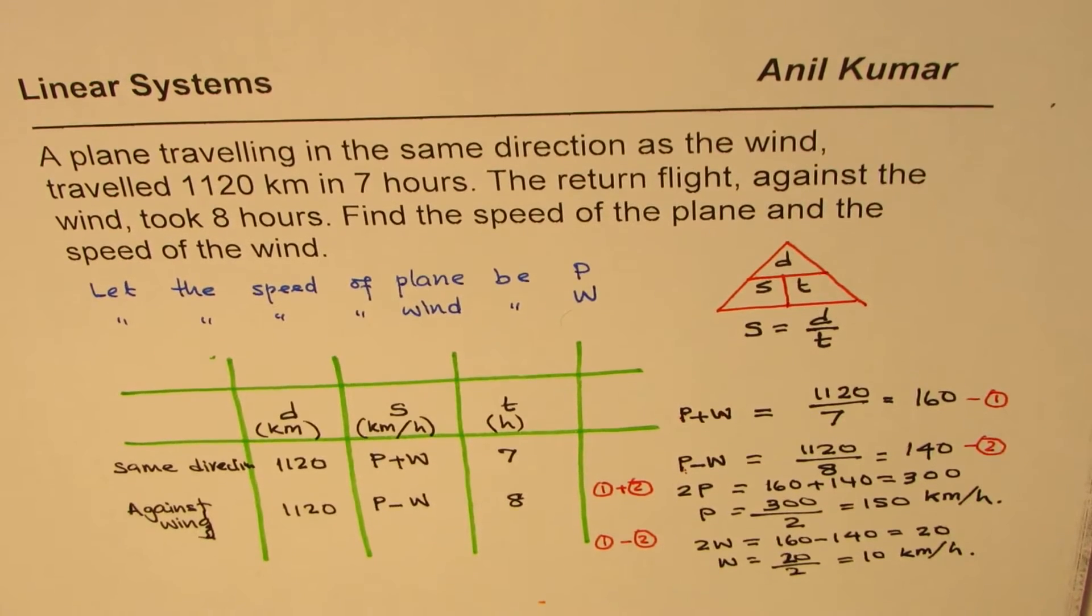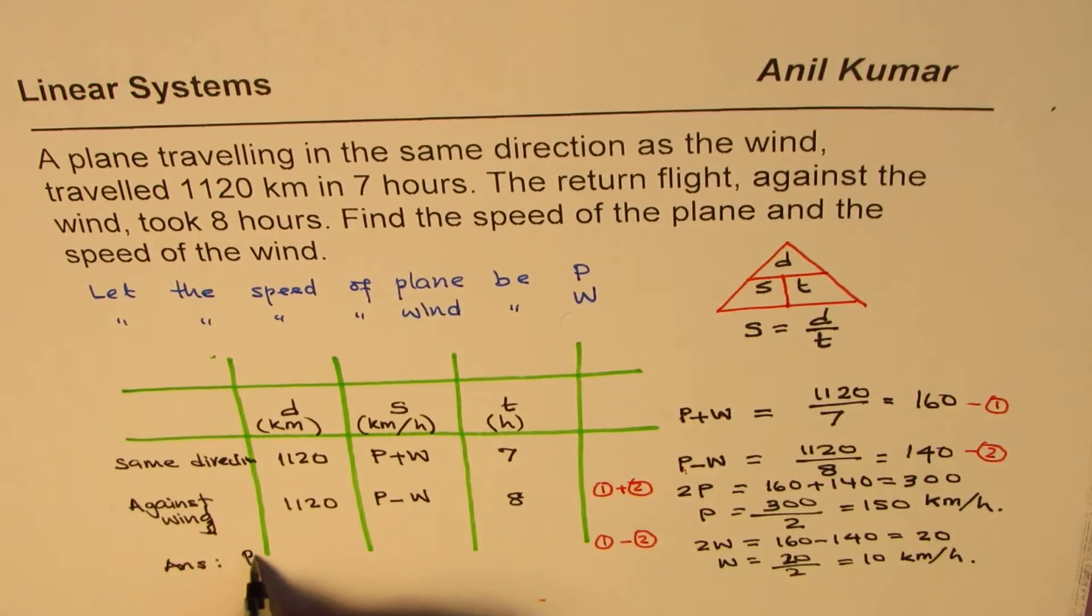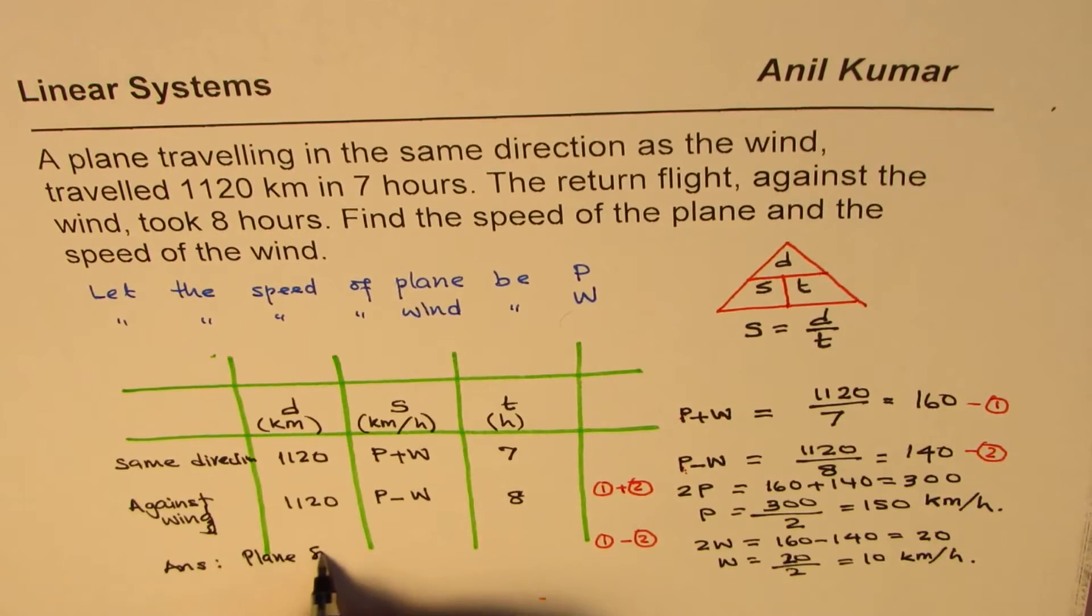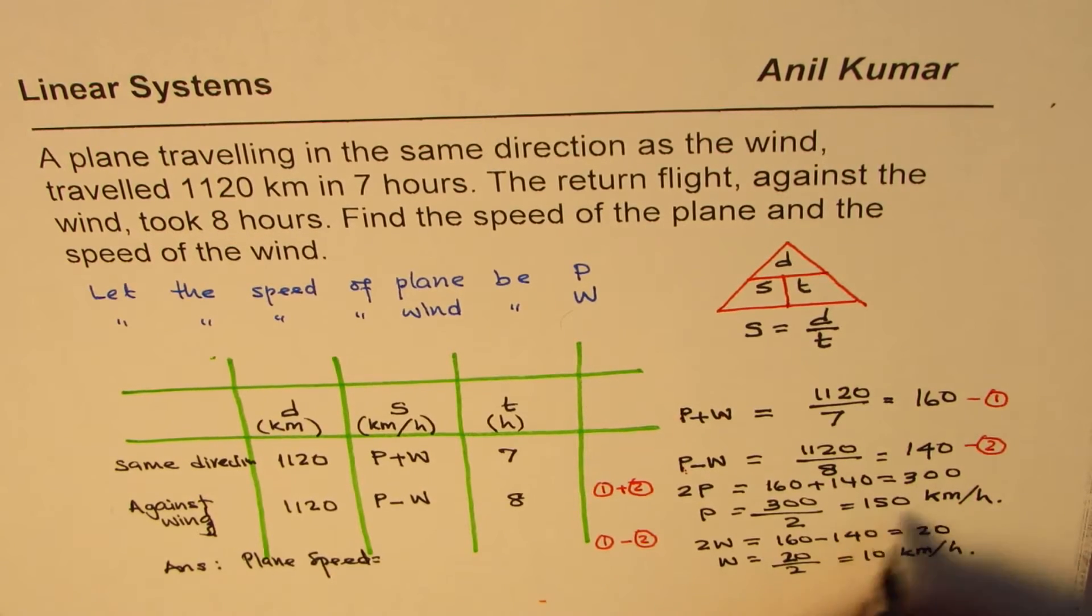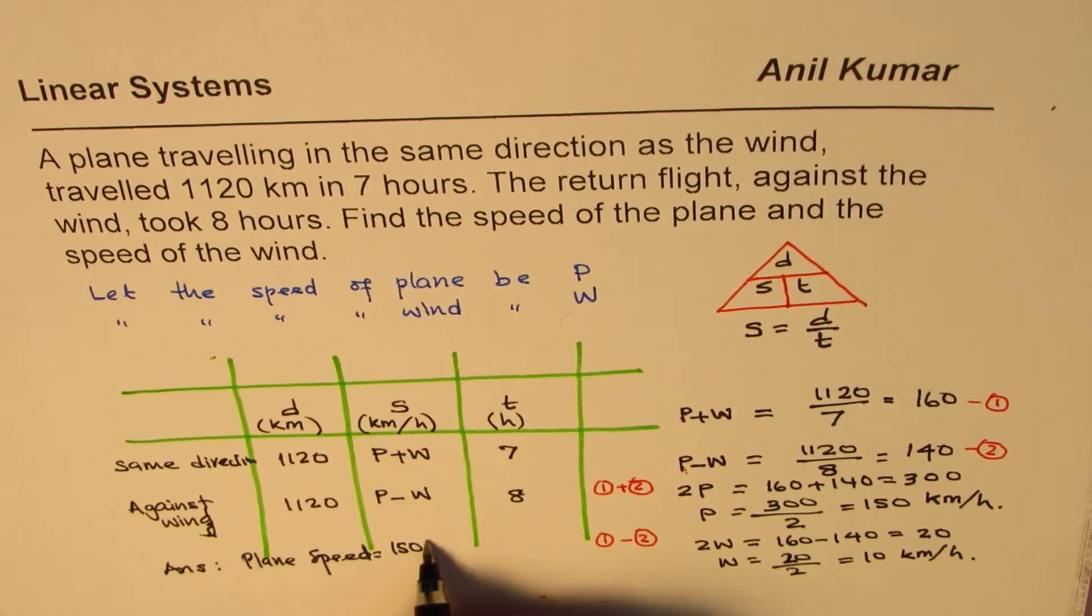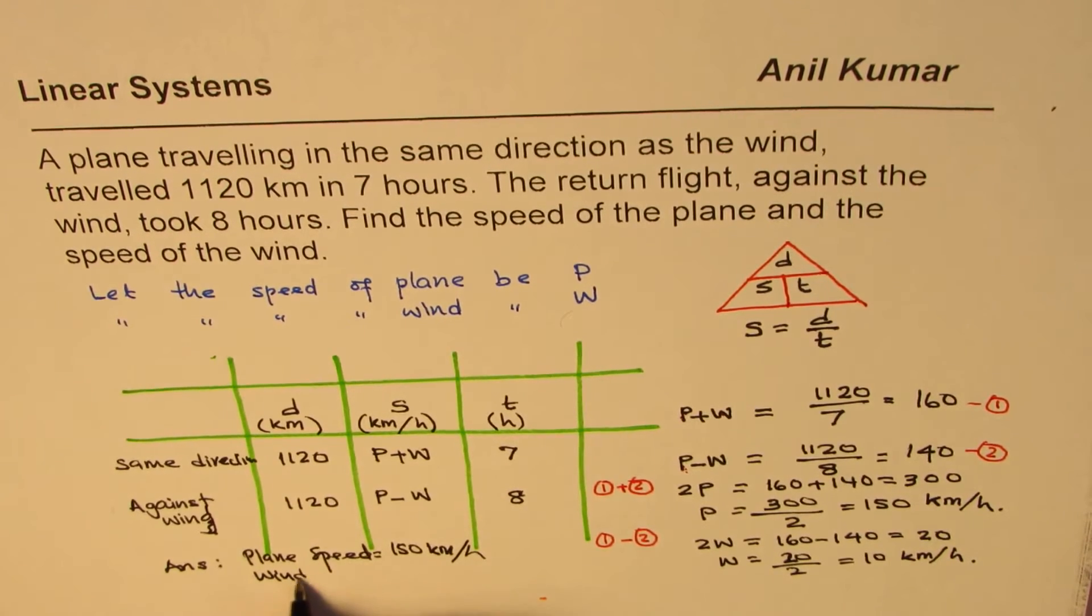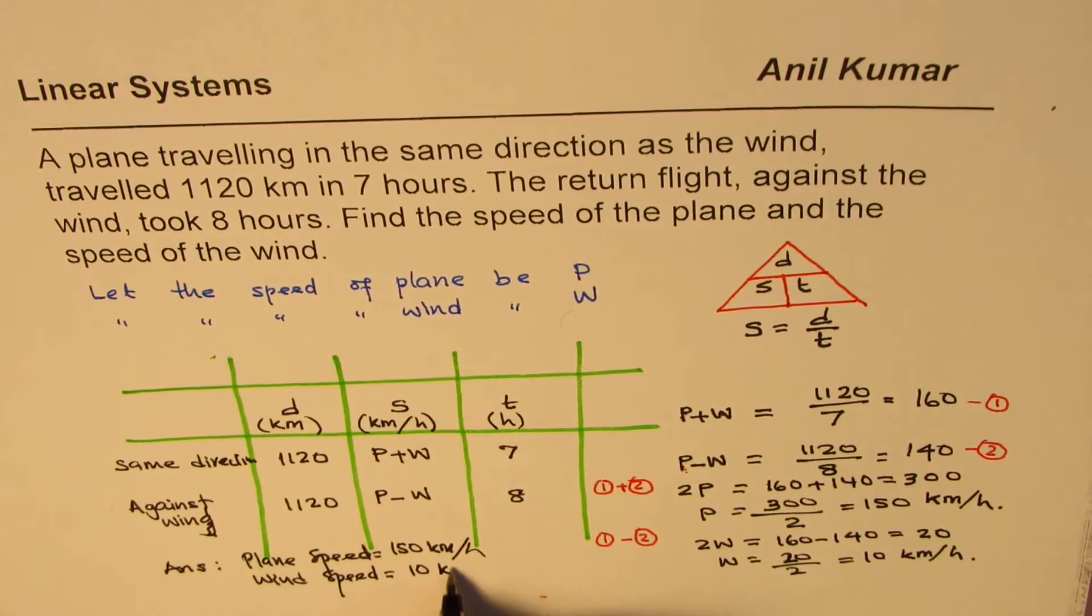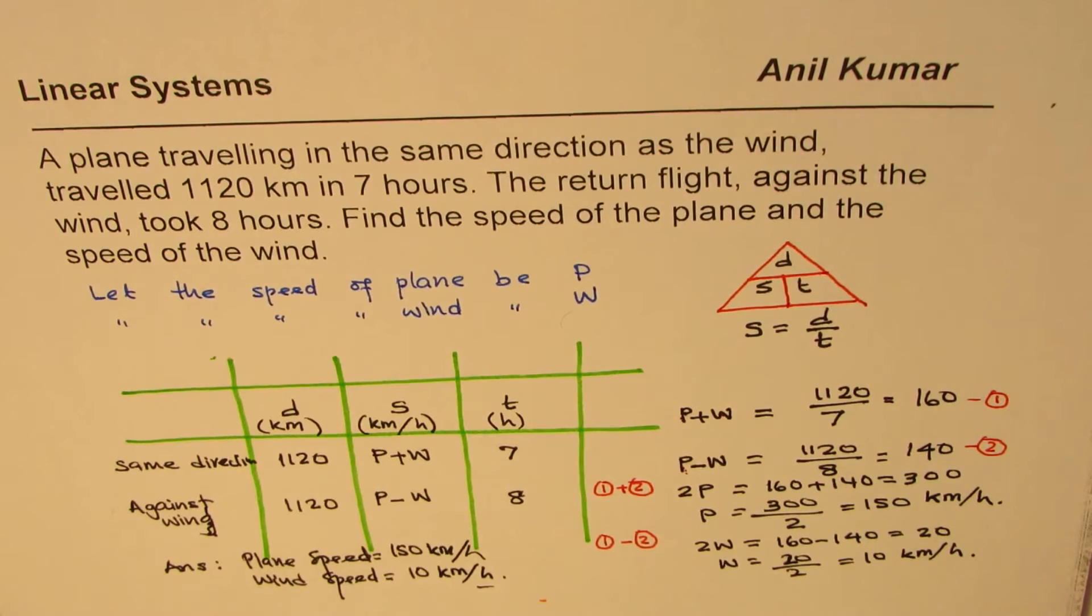So with that, we could solve the question. And now we can write down our answer, which is the plane speed equals to 150 kilometers per hour, and the wind speed equals to 10 kilometers per hour.